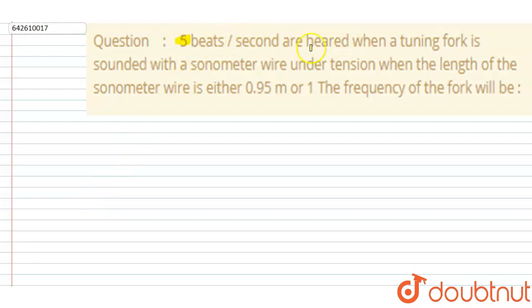Five beats per second are heard when a tuning fork is sounded with a sonometer wire under tension when the length of sonometer wire is either 0.95 m or 1 m. Then the frequency of the tuning fork will be what? We already know that frequency is inversely proportional to the length.